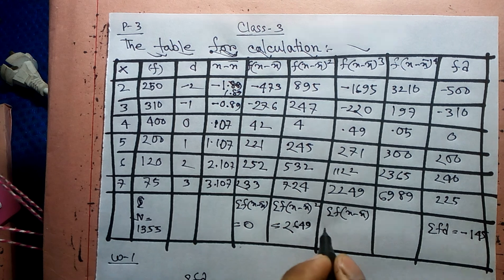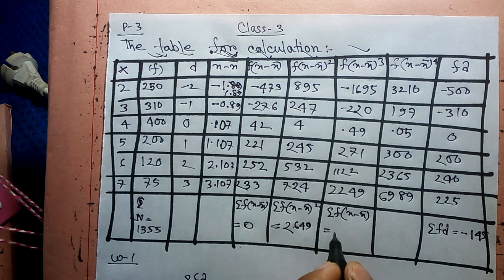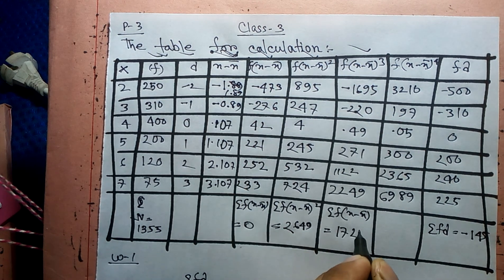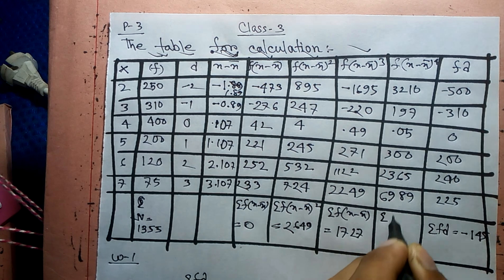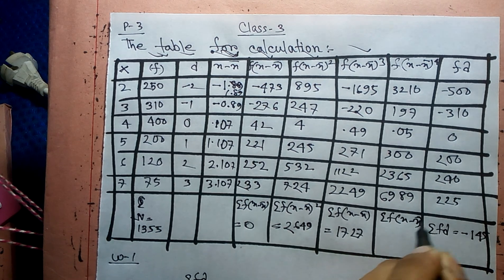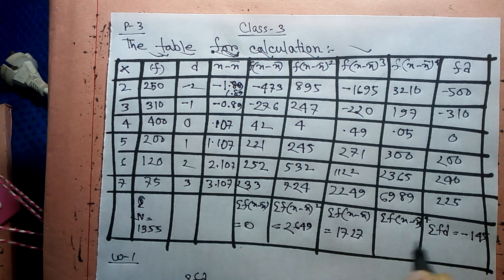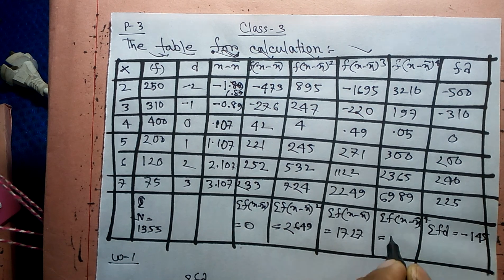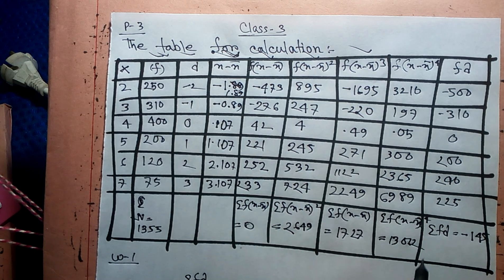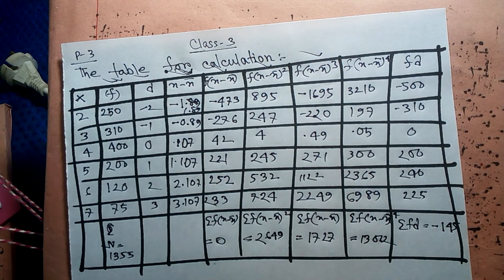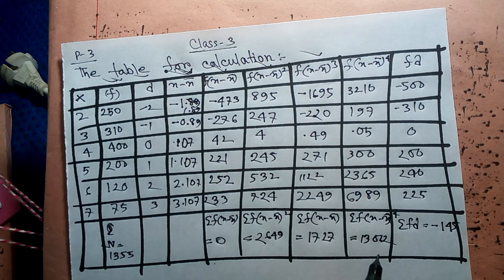We calculate it. Summation f into x minus x̄ has been 727. Here for summation f into x minus x̄ whole power 4 — we calculate. That has been 13,022. We can clearly boost this person. No problem.